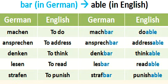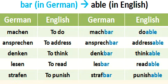The suffix '-bar' in German language works like this: we have to remove the '-en' at the end of the verb and add '-bar' instead. So to make the German equivalent of an English '-able' word, for example, 'machen' means 'to do' in English, and when we make 'doable' in English, we remove the '-en' from 'machen' and add '-bar', so it becomes 'machbar', meaning 'doable'.